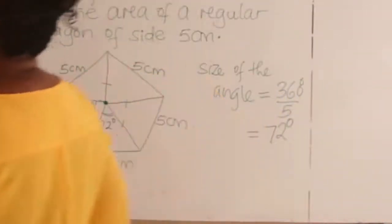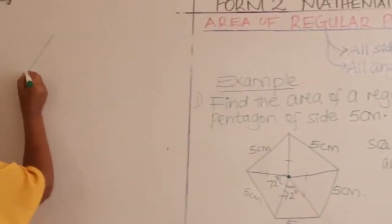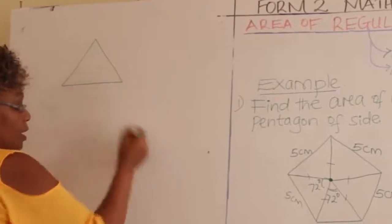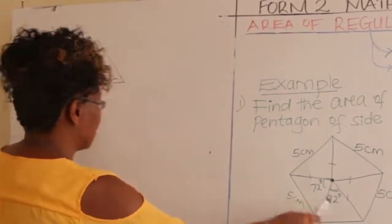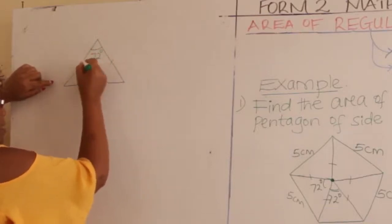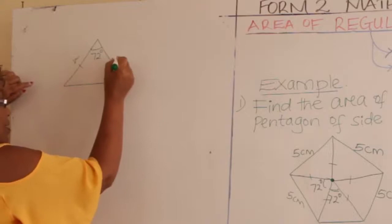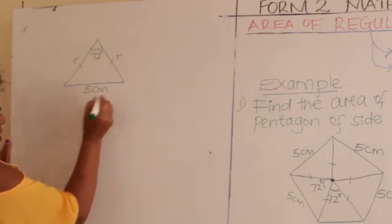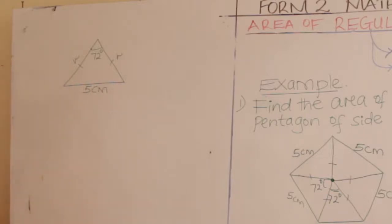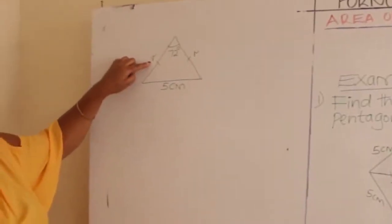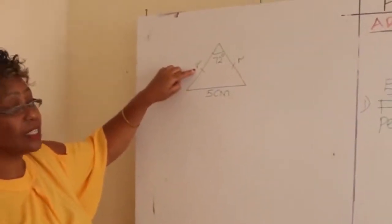Pick one of the triangles. Consider this one: the central angle here is 72 degrees, this side is a radius, this side is also a radius, and the base is five centimeters. How do we find this radius? If you look at our triangle, this is an isosceles triangle.